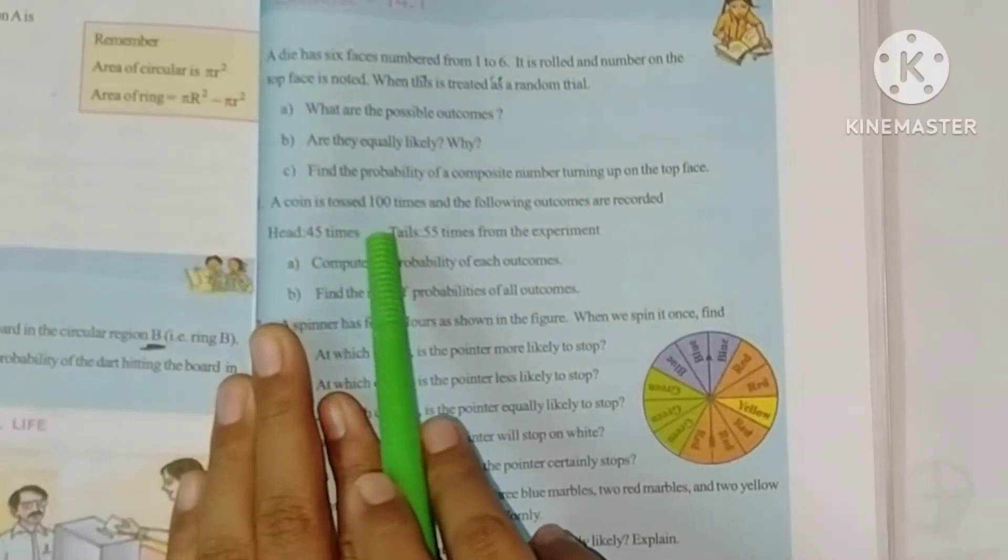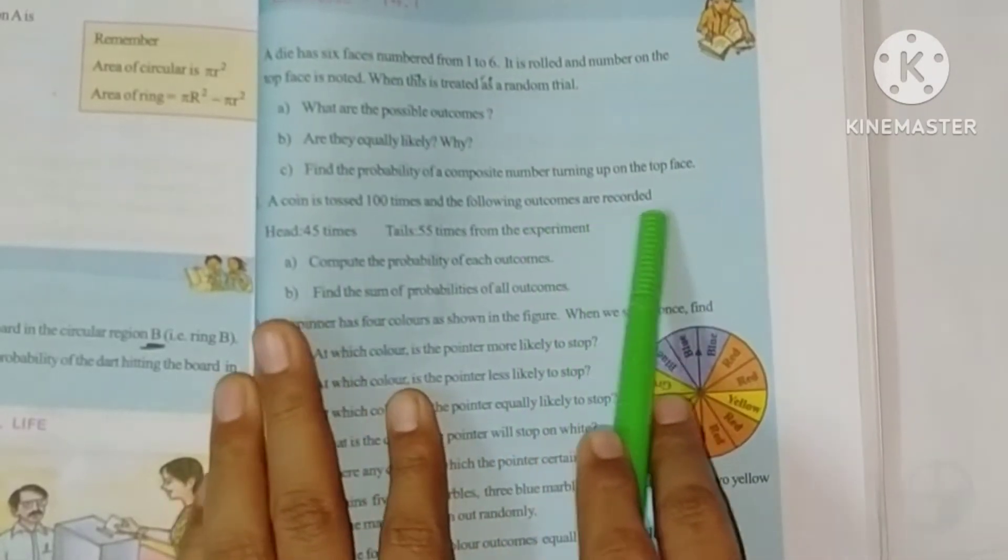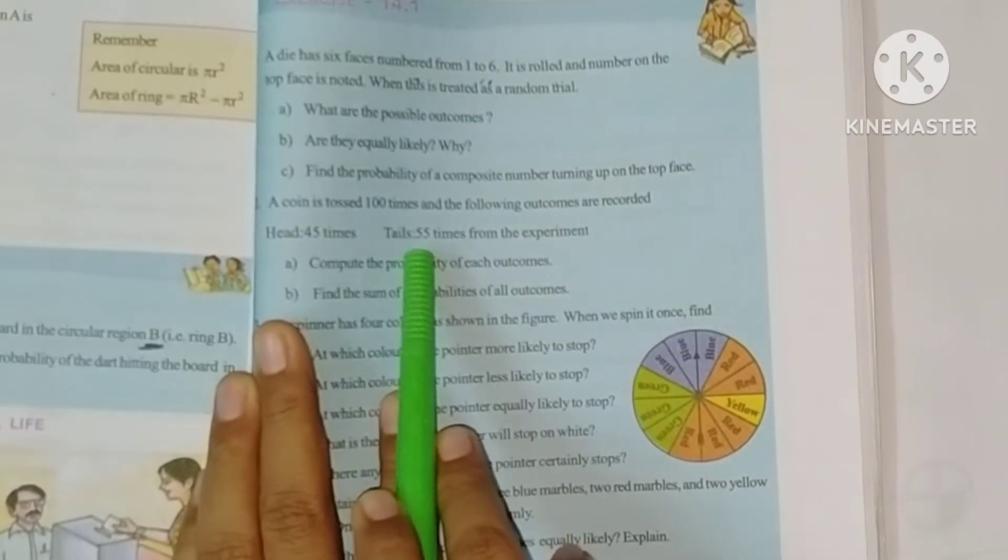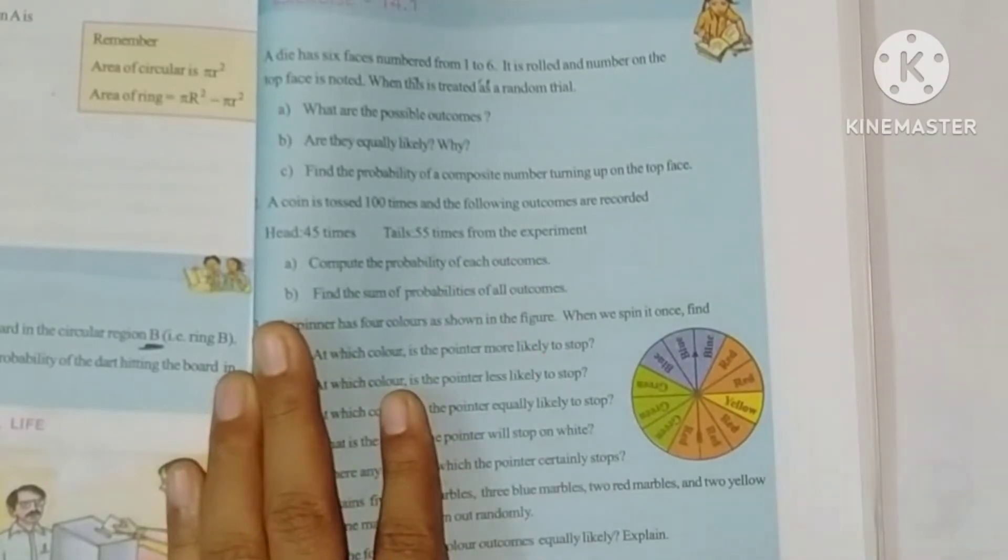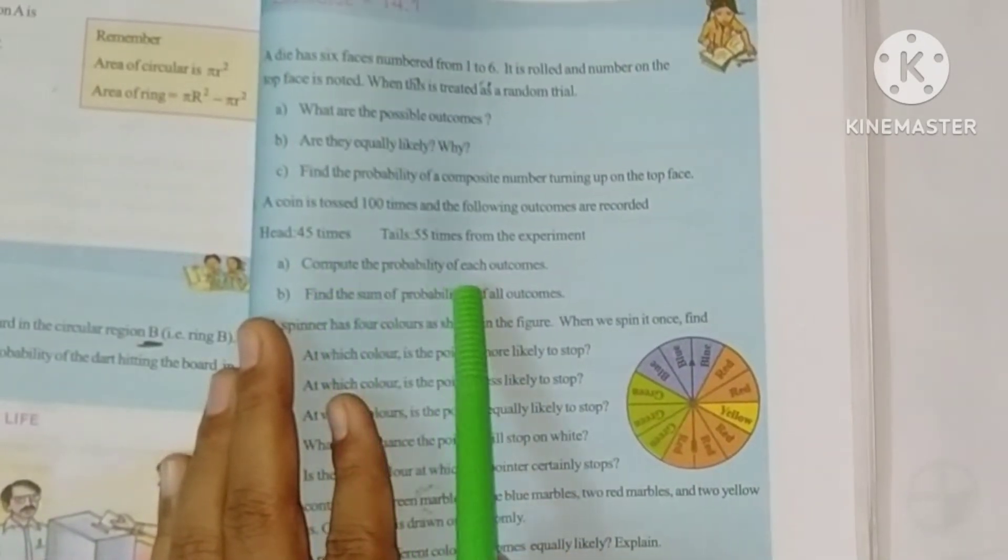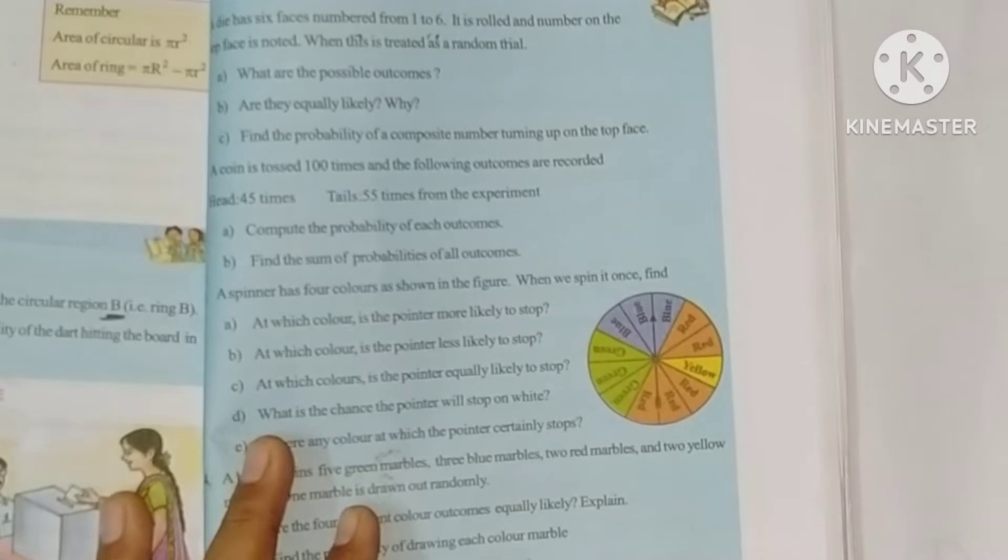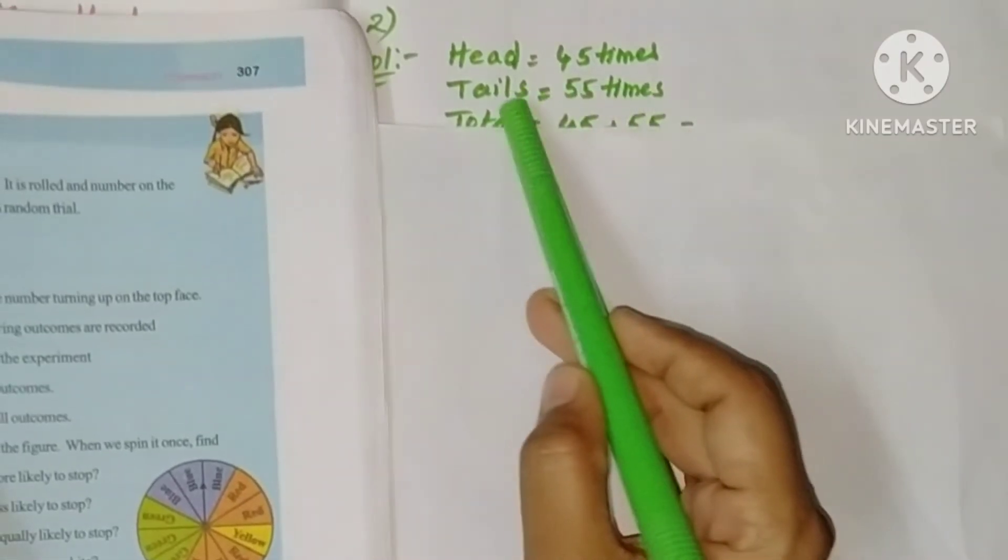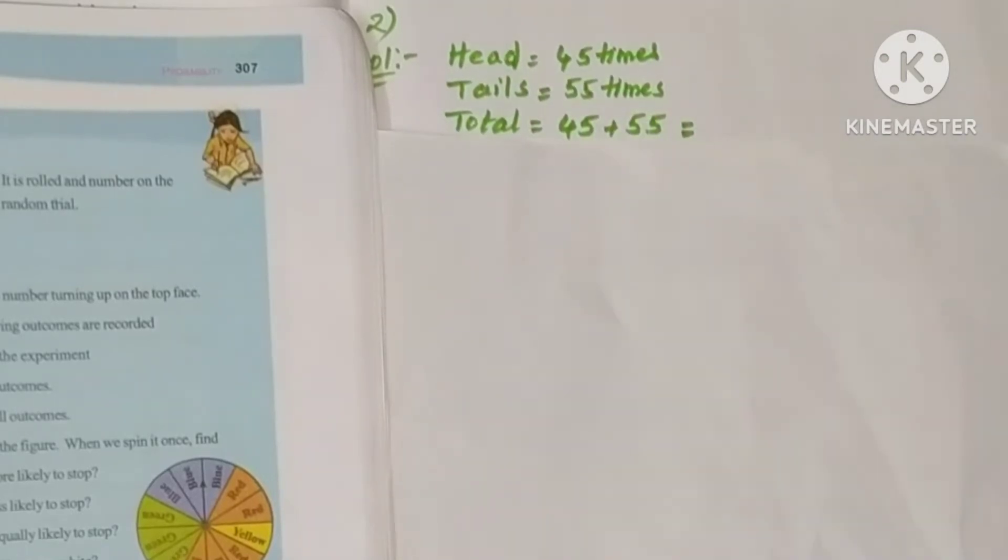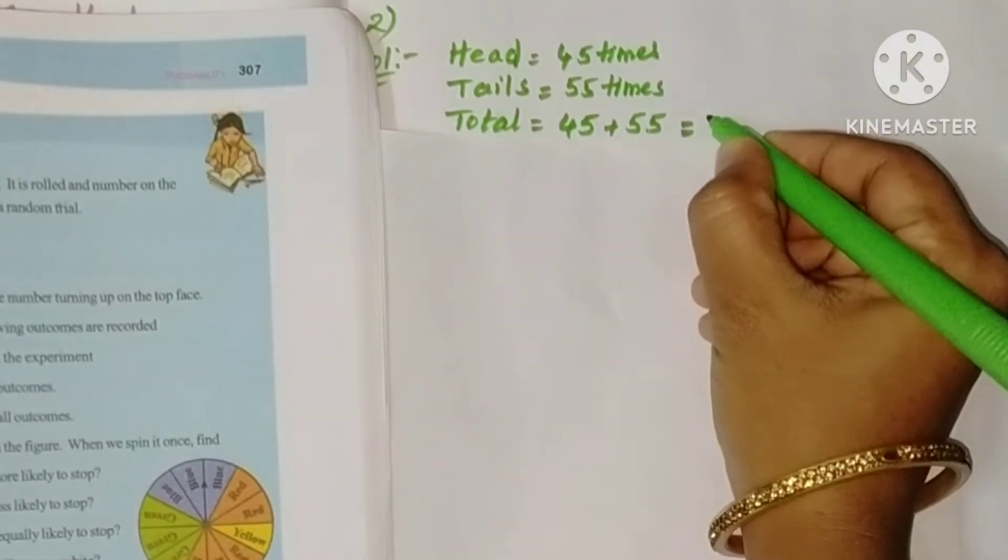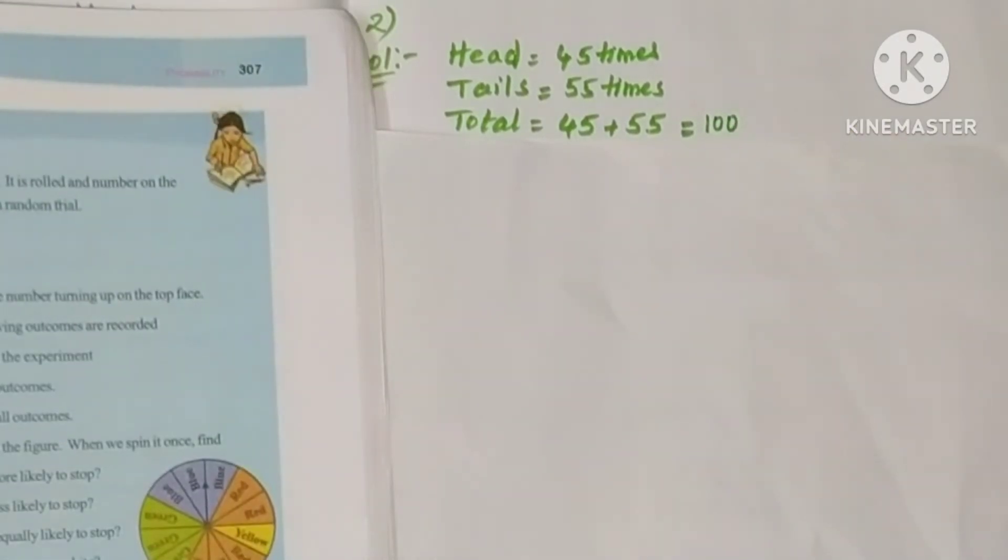Second problem: A coin is tossed 100 times and the following outcomes are recorded. Head 45 times, tails 55 times. Total 45 plus 55, how much total? It is 100. Total equals 100.